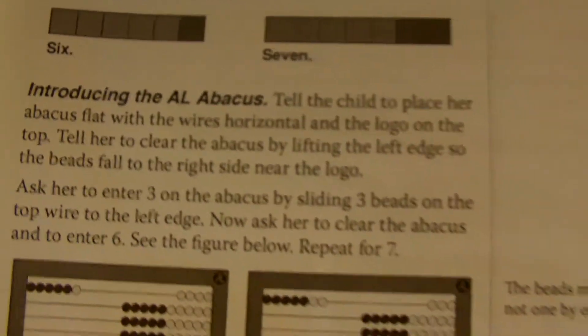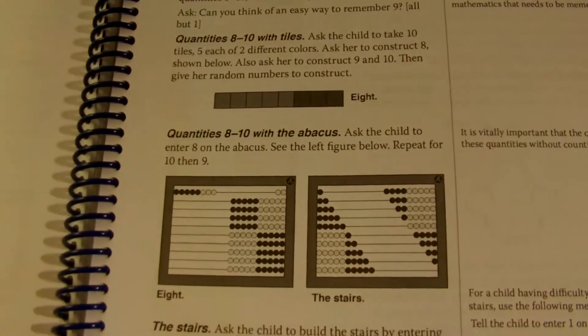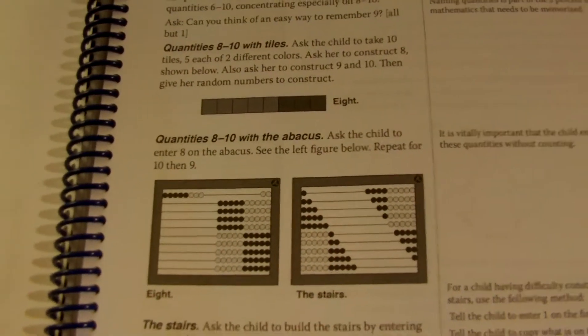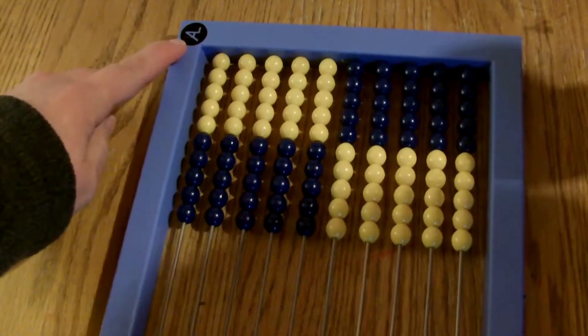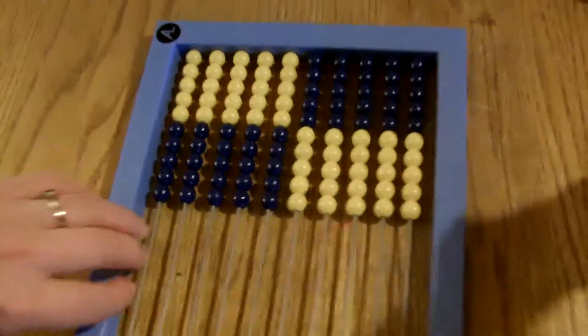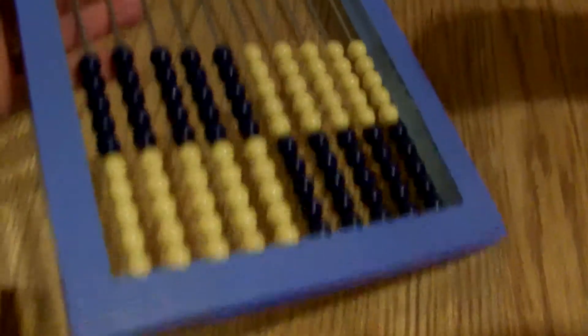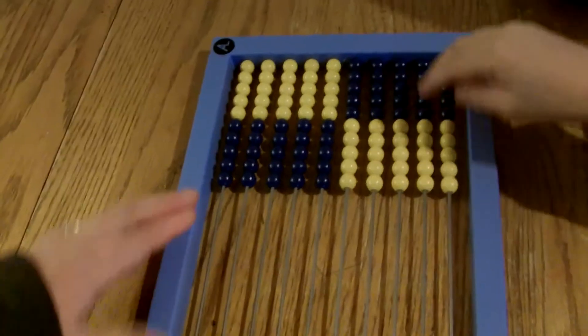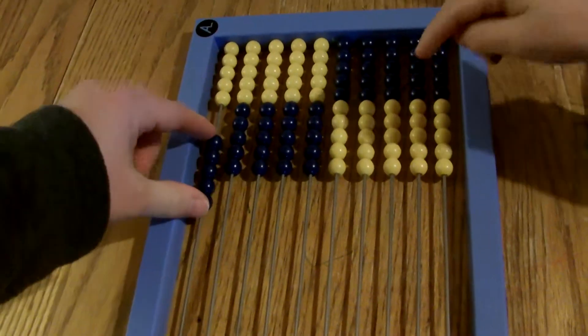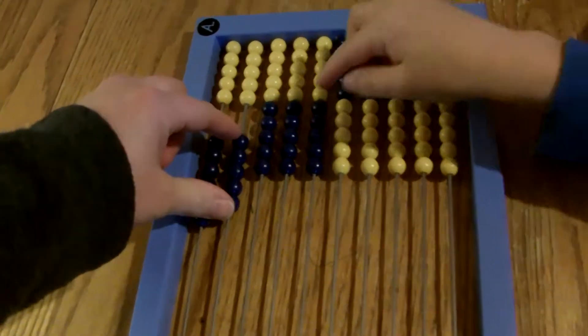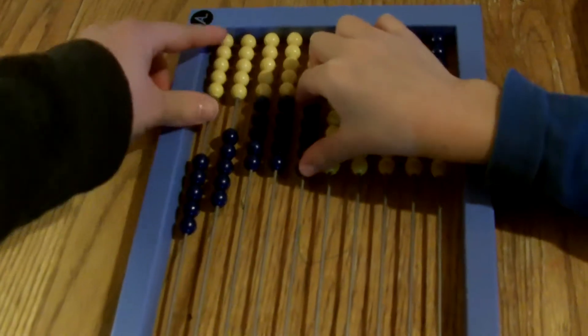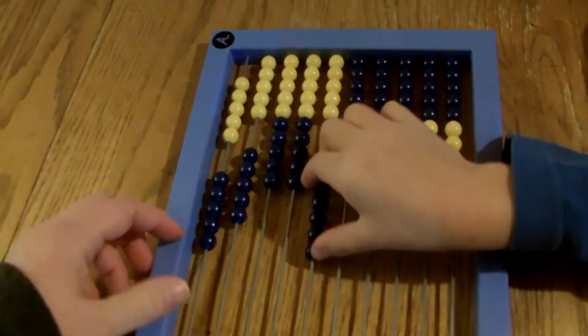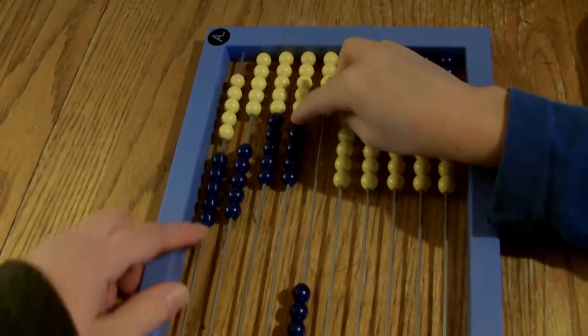Now we're going to use our abacus to work on the numbers we've been working on: six, seven, eight, nine, and ten. It's the front of the board, and this side we will use later at another time. The first thing we're going to do is note that these are in groups of how many? Five. Five of each color. So five and five make how many on a line? Ten.